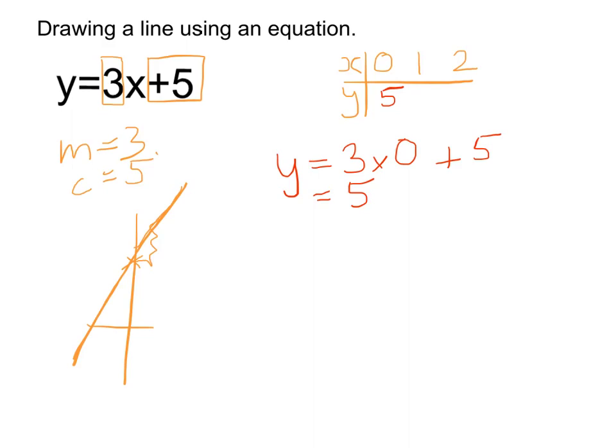We can do the same using the equation. So it's 3 lots of 1 this time, because we've used the 1, and then adding 5. So that means we have 3 plus 5 is 8. Put that in the table, 8.